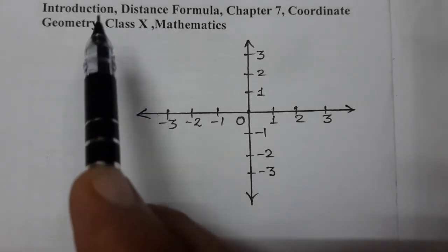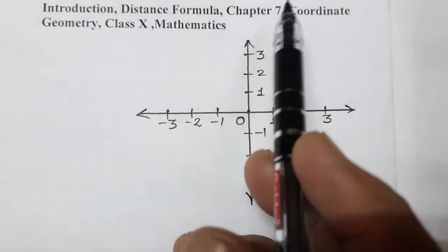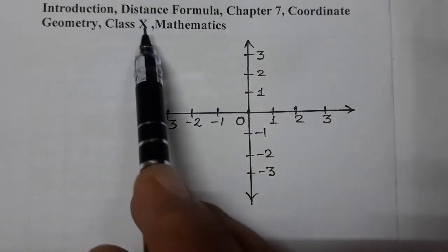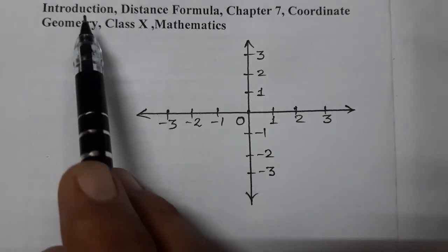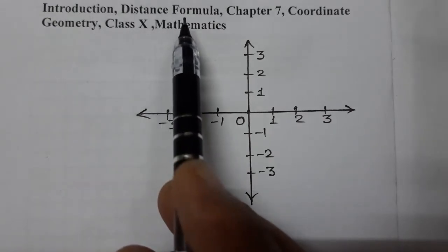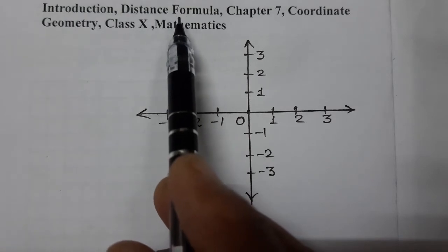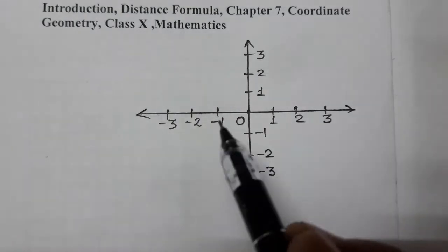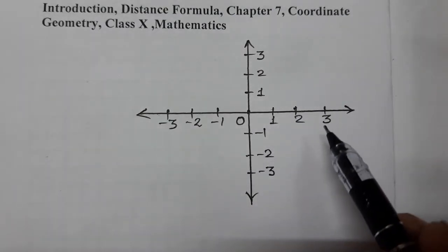Hello students, today we are going to start a new chapter — Chapter 7: Coordinate Geometry, Class 10 Mathematics. Today we are going to introduce this chapter as well as we will see the distance formula — how to find the distance between two Cartesian coordinate points.